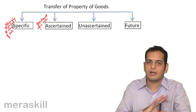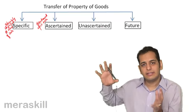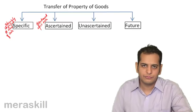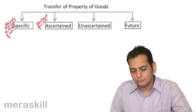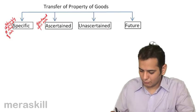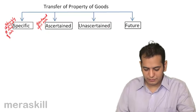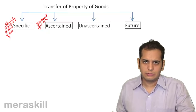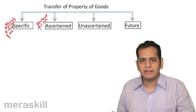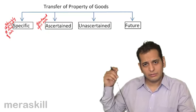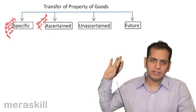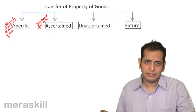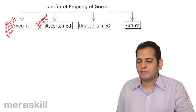Unascertained goods are not separately identified at all — they are part of the whole stock of goods. If the seller does not separately identify the goods and they remain kept with the bulk in his godown, those goods are unascertained.